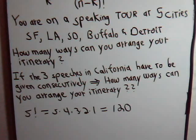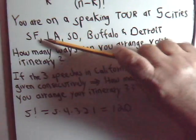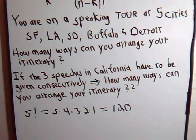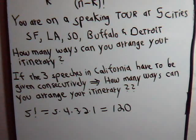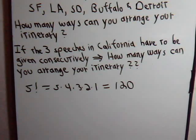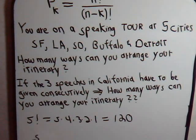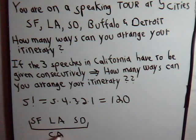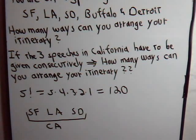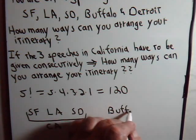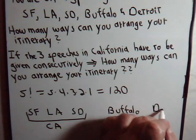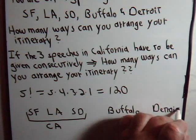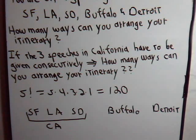Now, for the second part of the problem, it says that the three speeches in California — San Francisco, Los Angeles, San Diego — have to be given consecutively. We can think of this as the California part of the trip, and there's also Buffalo and Detroit. So here we consider California as a group.